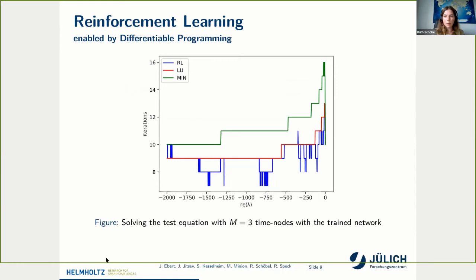We see here the result for a network trained for three time nodes. We asked the network to solve the test equation with different negative lambdas and recorded the number of iterations needed for SDC to reduce the residual below a given tolerance. In blue are the results for the reinforcement learning setup, in red for the LU decomposition, and in green for opt. We see that the reinforcement learning preconditioner is in most cases the best choice.